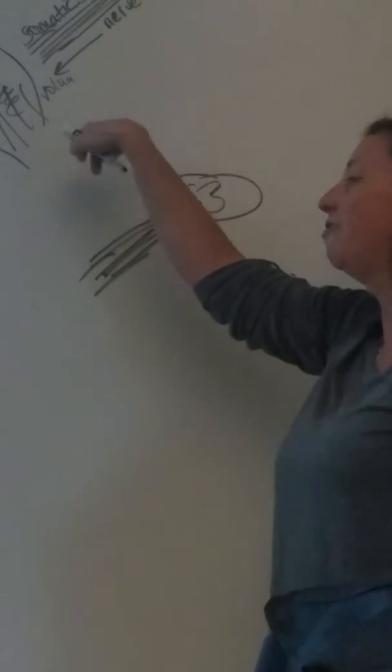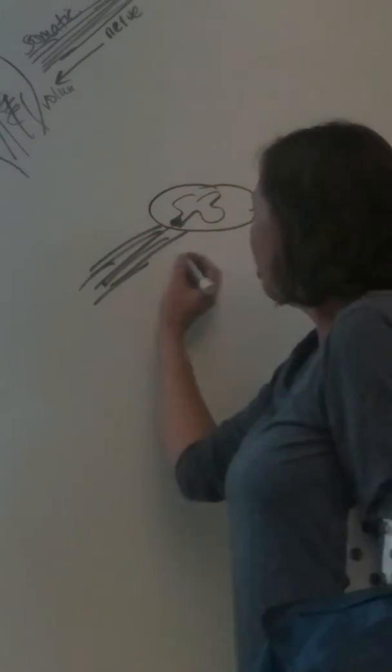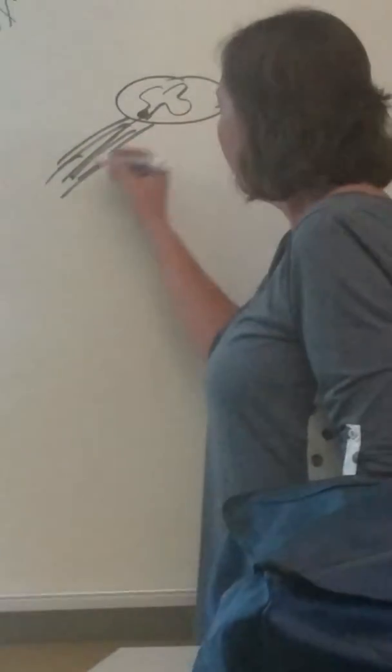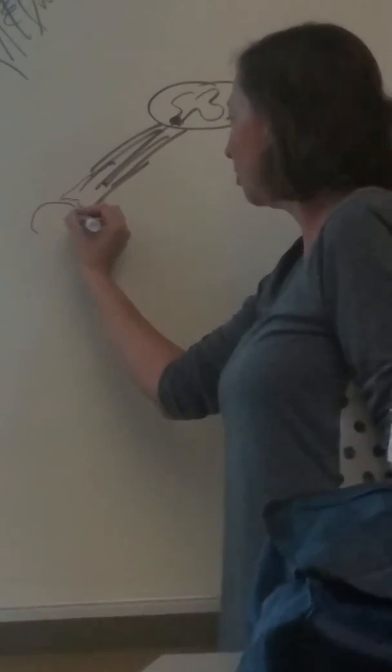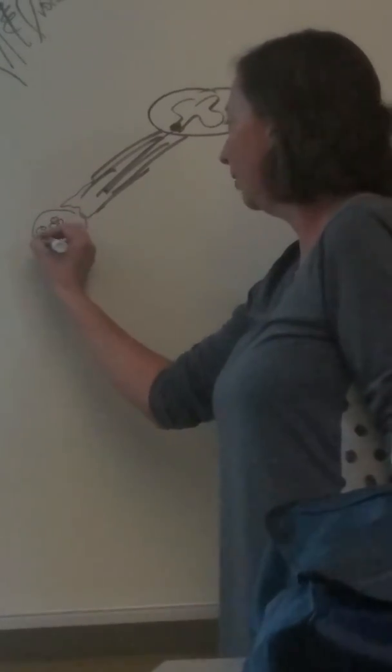Let's look at what happens when we have an involuntary response to our internal organs. You actually have two nerves or two axons, however you want to think of it, connected together. The first one is going to stop, and then the second one starts at the ganglia. That begins the next one.